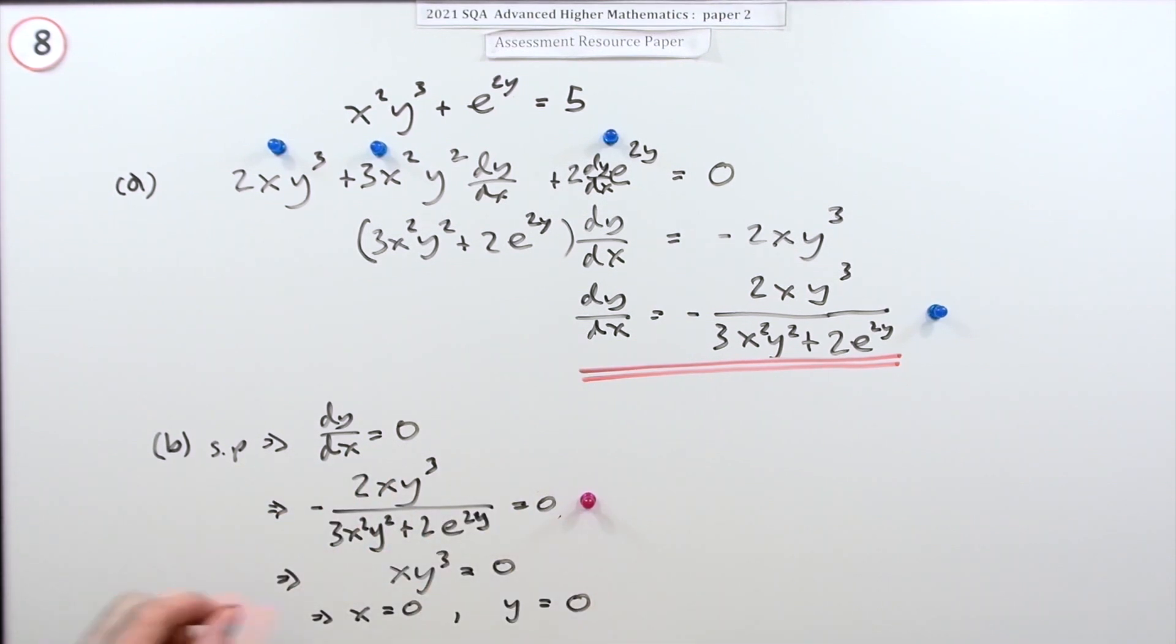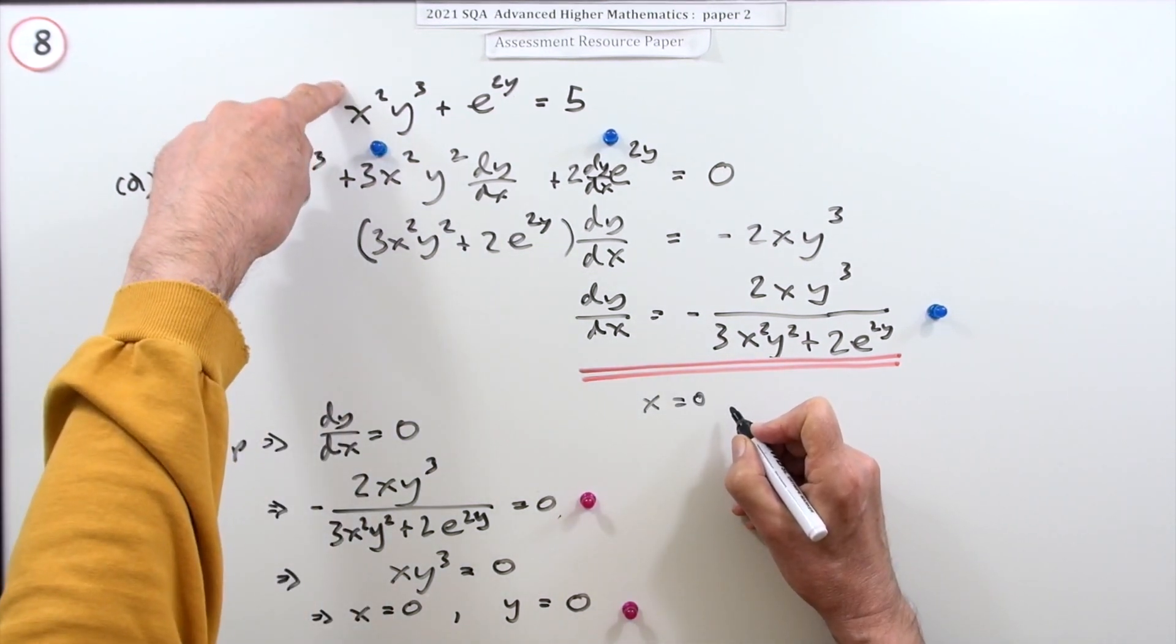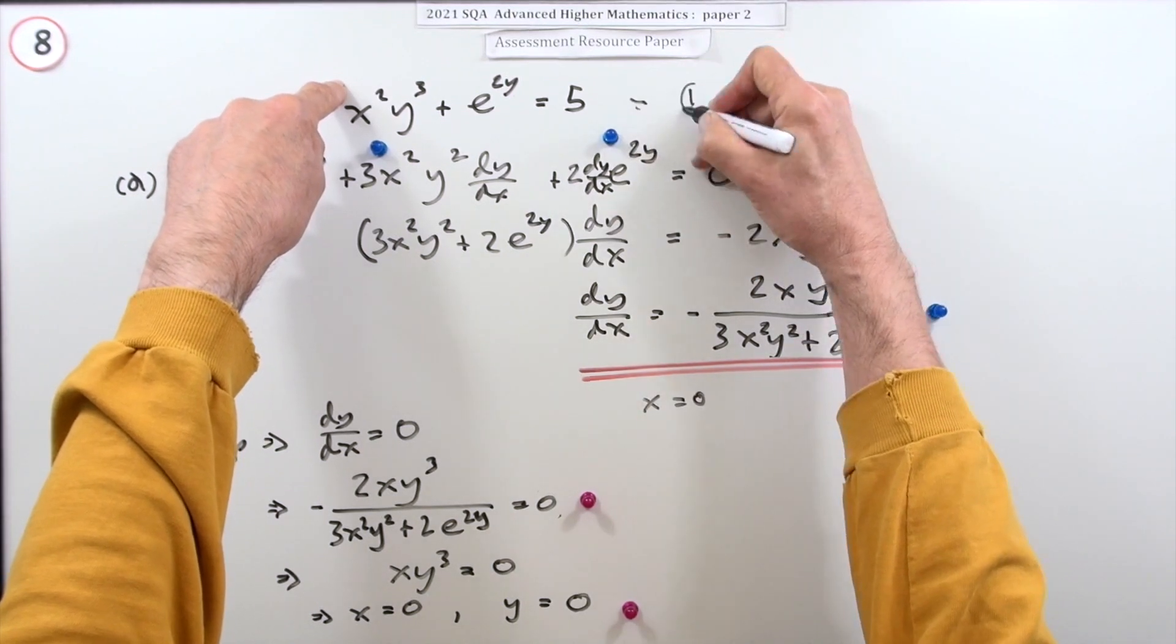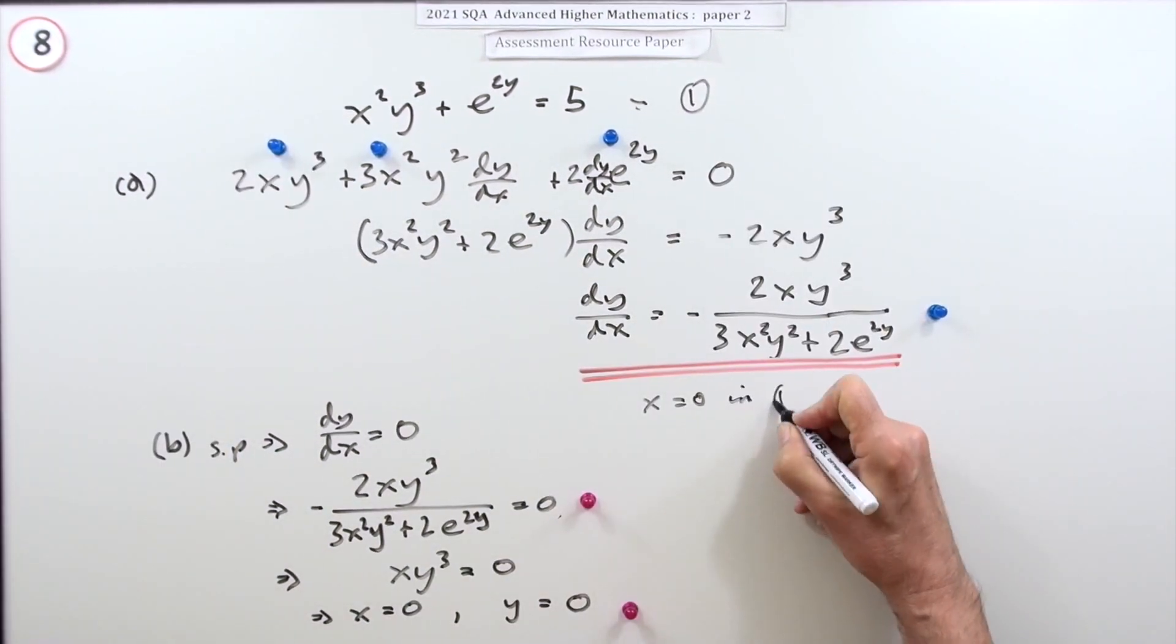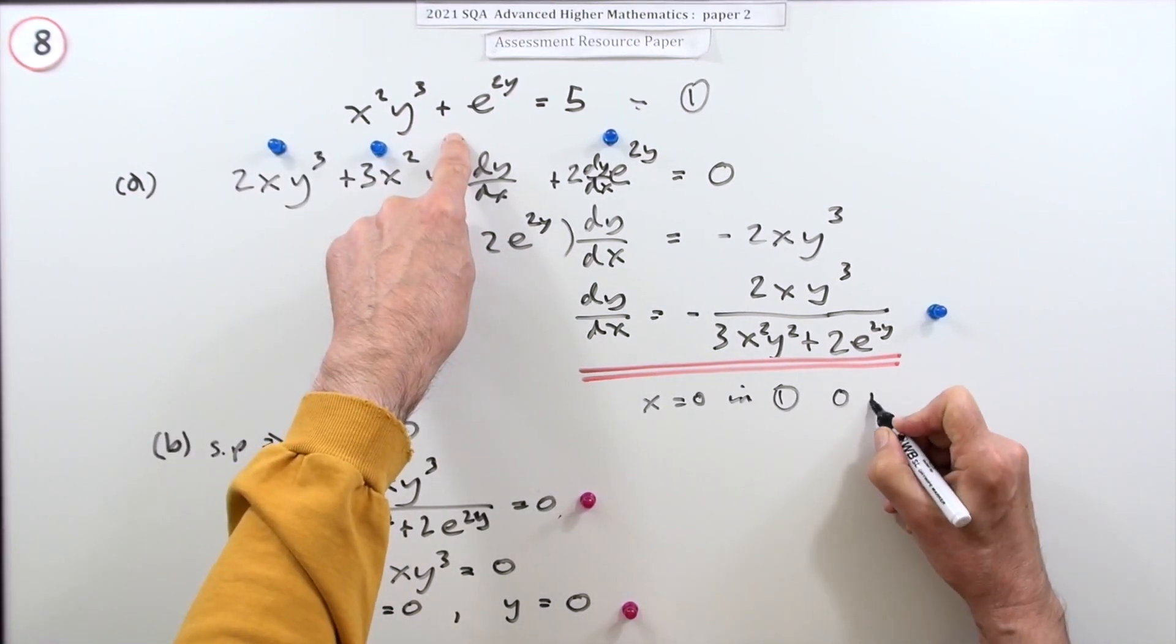But now you've got to demonstrate why only one of them gives an answer. We'll find out what's wrong by putting it back in and finding the corresponding y coordinate. So let's take x equals zero. If you put x equals zero back into this - call that equation one - you get zero plus e^(2y) = 5.